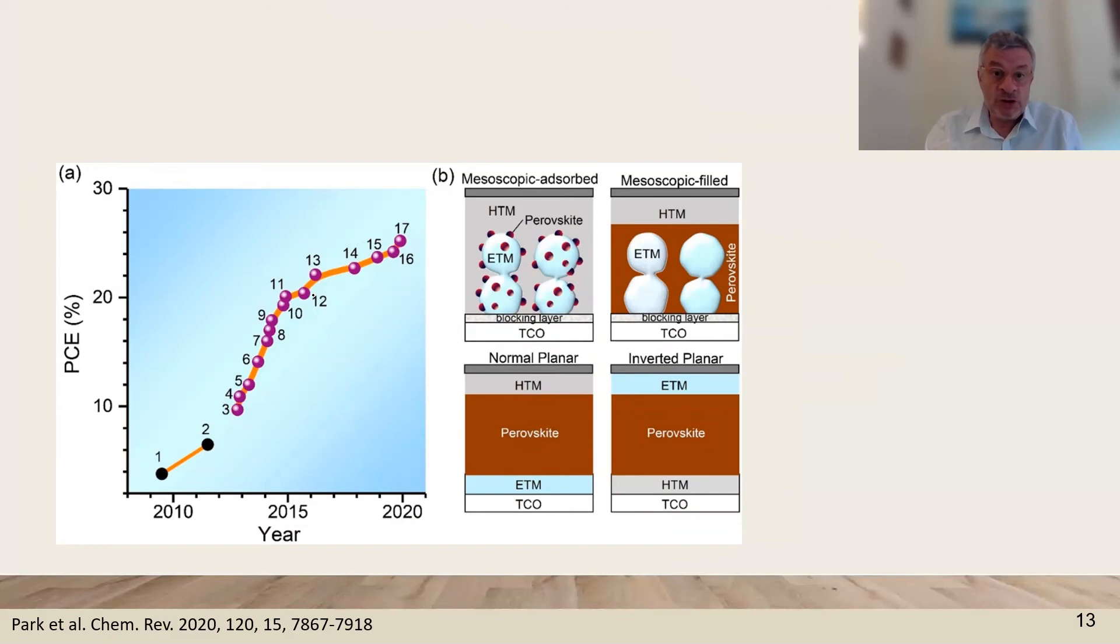Now, evolutions of efficiencies. We have the analysis of laboratory cells, which may be rather small, around one centimeter square. And this is the evolution of the perovskite solar cell since 2010 to 2020, reaching 25% in different configurations.